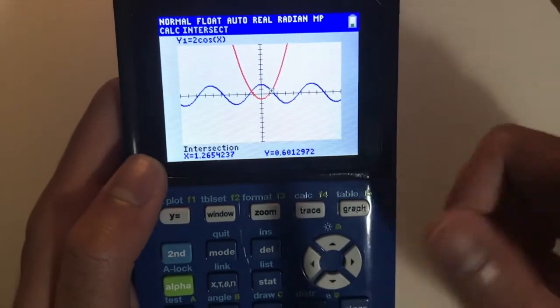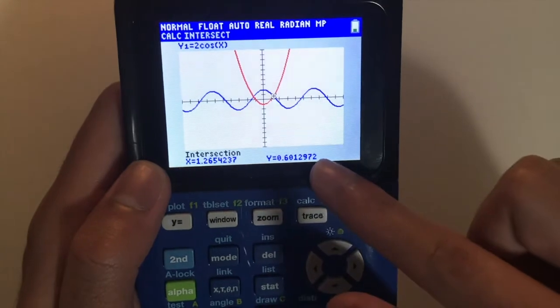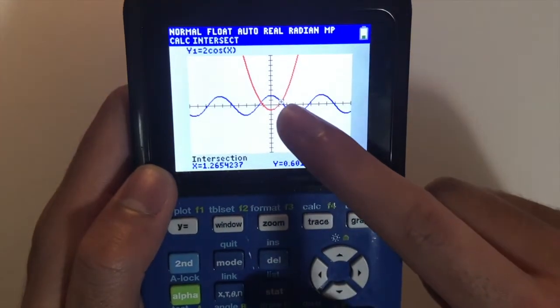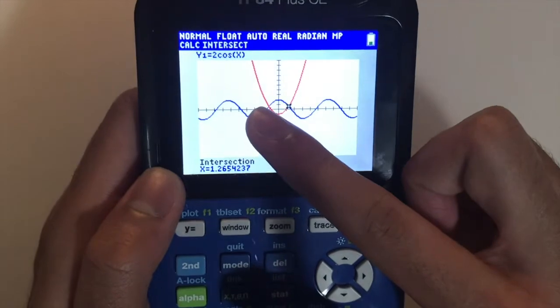And automatically, it's going to figure out the x and y coordinates of that point of intersection. And we can do the same for this one as well.